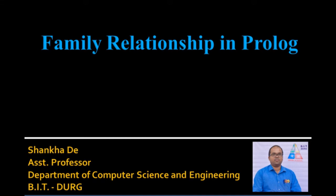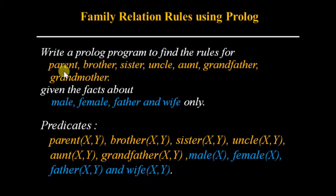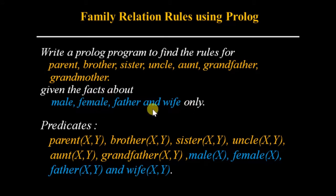Today we will discuss how to define rules for family relations using Prolog. We will define the rules for parent, brother, sister, uncle, aunt, grandfather, and grandmother by using the facts male, female, father, and wife. These are the facts given, and we have to define rules for these family relations.